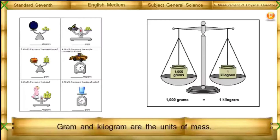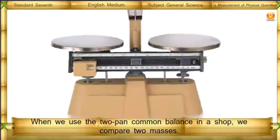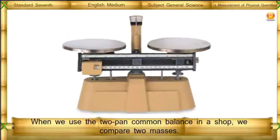Gram and kilogram are the units of mass. When we use the two-pan common balance, we compare two masses.